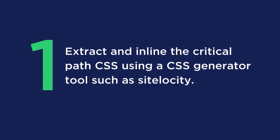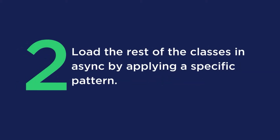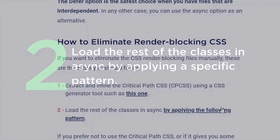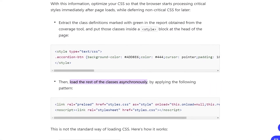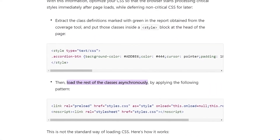First, you will need to extract and inline the critical path CSS using a CSS generator tool such as sitelocity. And then second, load the rest of the classes in async by applying the specific pattern linked within the article. It's kind of hard to show in the video. Now, if you have no clue how to do this and you just want this fixed, an easier alternative is with our plugin WP Rocket.